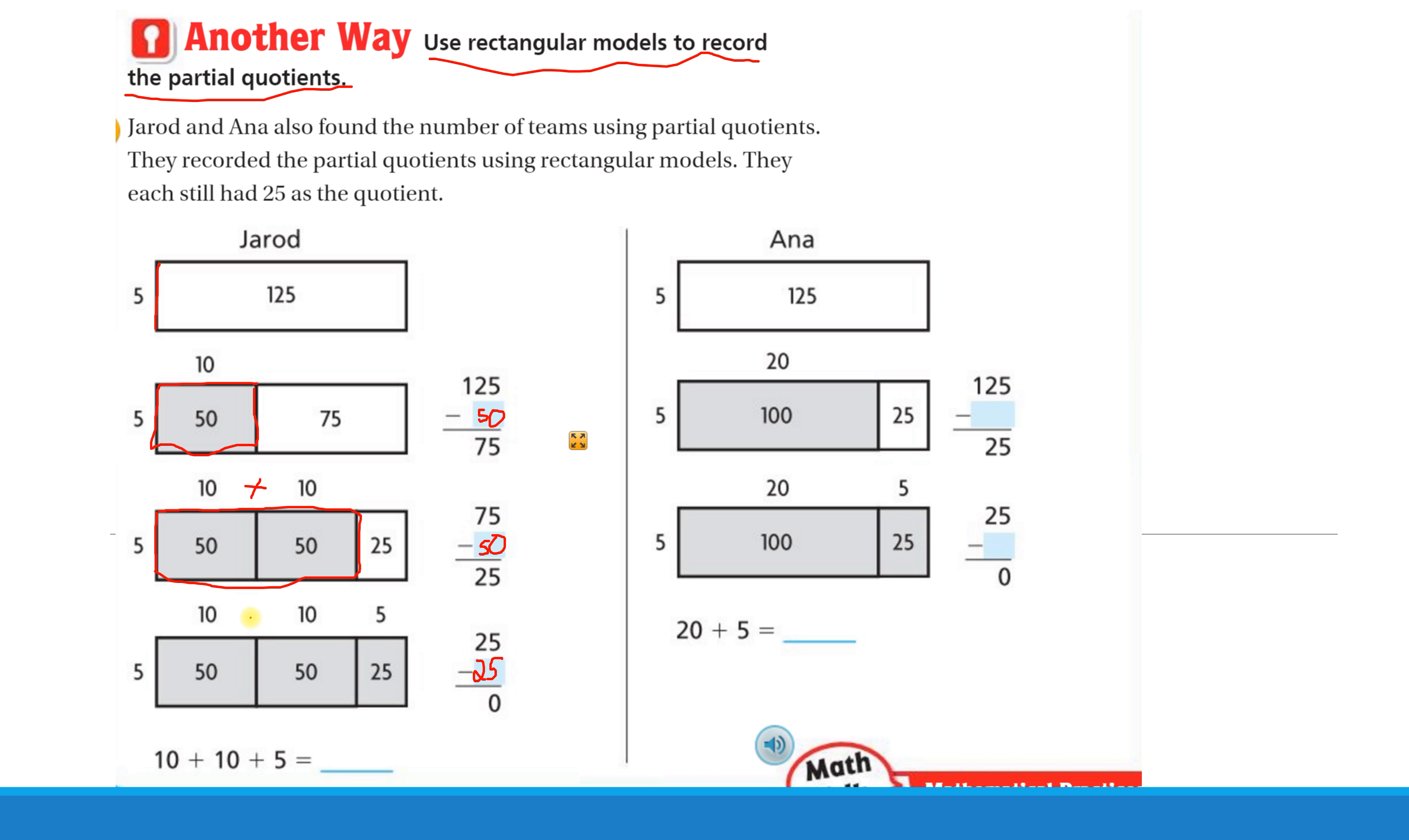Then he goes and adds these numbers like we did before. Before, we added the interior numbers. Now for division, we actually add these numbers across the top. These numbers tell us how many groups of 5 there were. 10 groups of 5 plus another 10 groups of 5 plus 5 groups of 5. That's 25 groups of 5. So our quotient is still 25 for Jared.